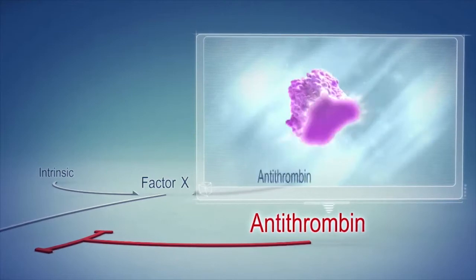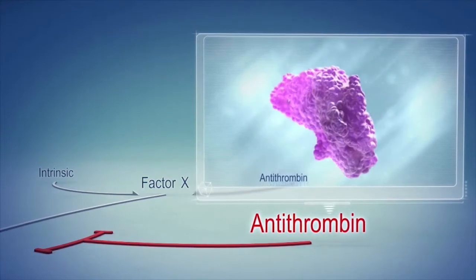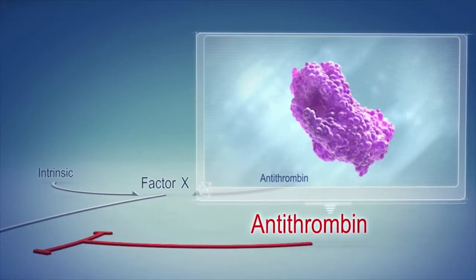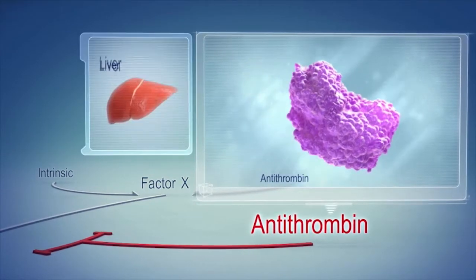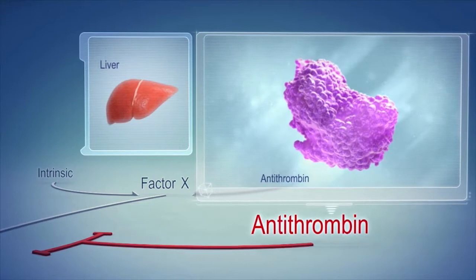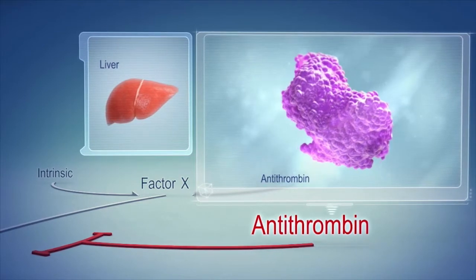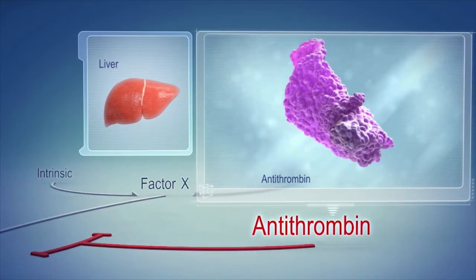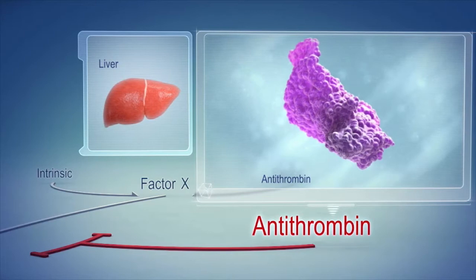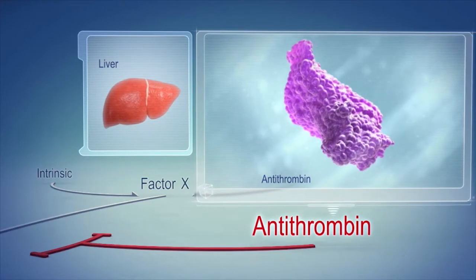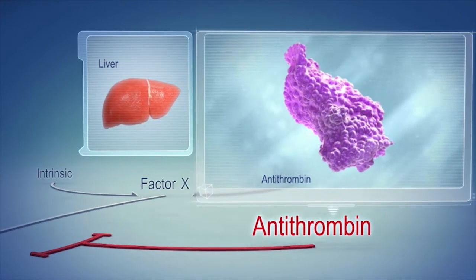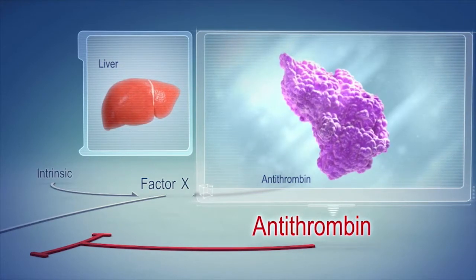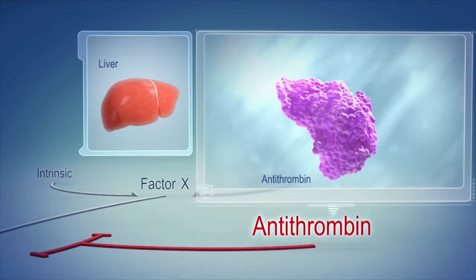Antithrombin, a serine protease inhibitor, or SERPIN, synthesized in the liver, is the predominant naturally occurring inhibitor of the coagulation cascade. It is responsible for approximately 80% of the endogenous anticoagulation effect against thrombin.